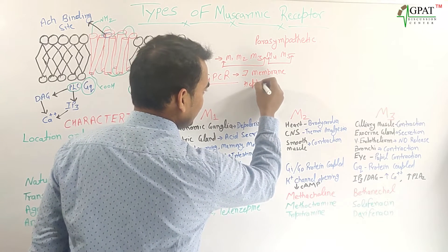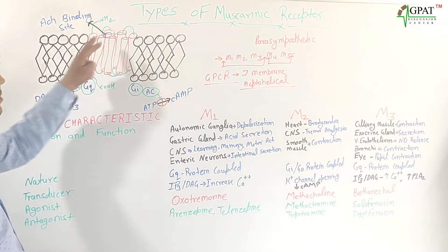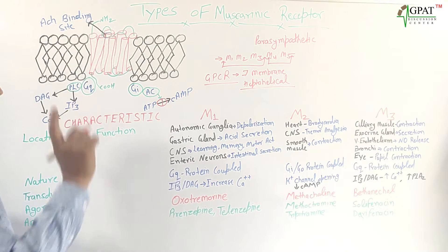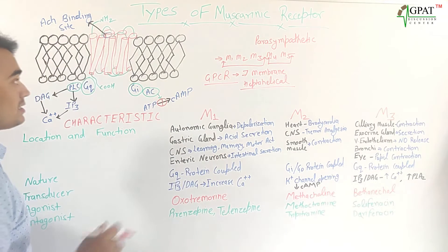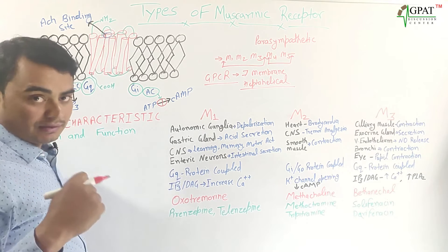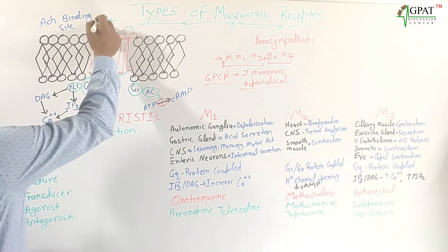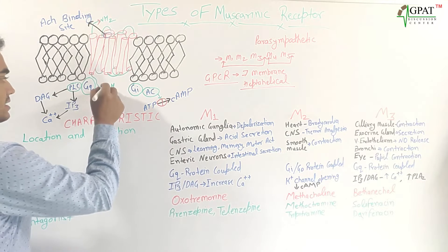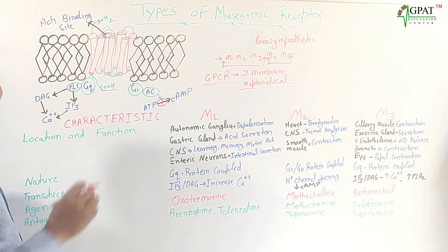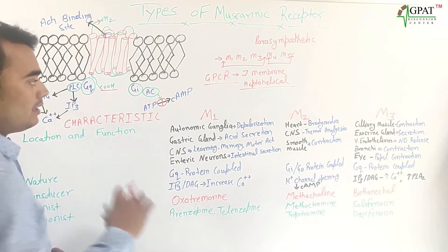These heptahelical receptors have an acetylcholine binding site. One more thing: these seven-membrane heptahelical receptors have a sequence of amino acids. The amino acid chain has an amino group at one end and a carboxylic acid group at the other — the extracellular end has the amino group while the intracellular end has the carboxylic group. Acetylcholine mainly binds on these sites, activating the effector signaling pathway.